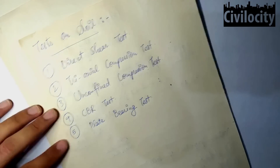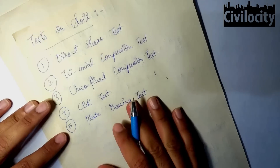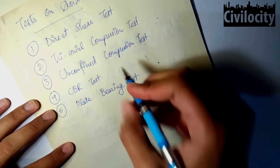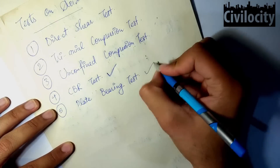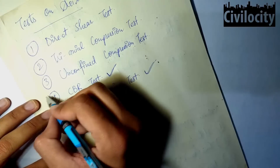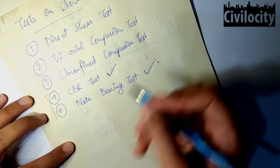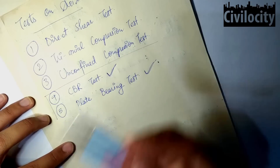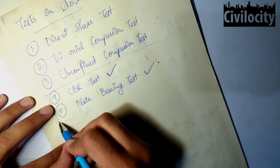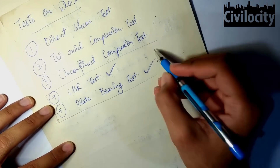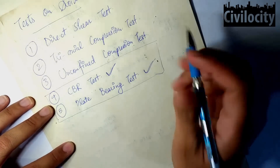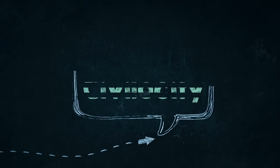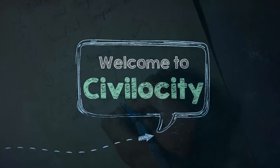In highway engineering, the most important two tests are the CBR test and the plate bearing test, which are in our syllabus. We are going to cover these two in highway engineering, but all five tests will be covered in soil mechanics. First, let's talk about the CBR test. CBR stands for California Bearing Ratio test.